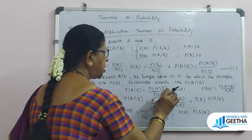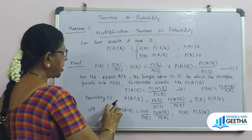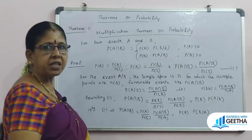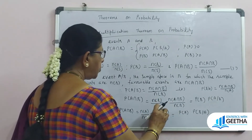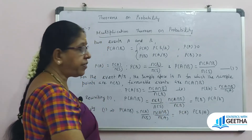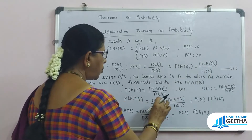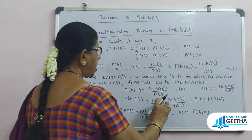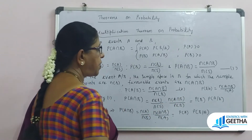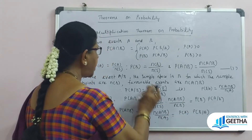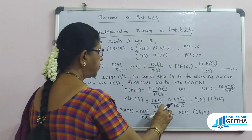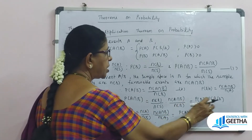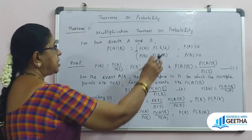We rewrite P(A intersection B) divided by n(B) as follows: n(A intersection B) divided by n(S) is rewritten over n(B) divided by n(S), which equals P(A intersection B) by n(S) divided by P(B) — giving P(A intersection B) equal to P(B) times P(A|B). This proves the multiplication theorem.